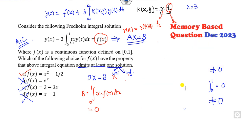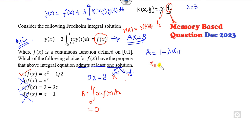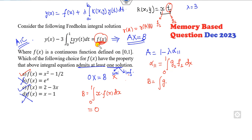Let me recall the concept. You change the integral equation into a system of equations, where a is 1 minus lambda times alpha11, and alpha11 is the integration from a to b of g1 into f1 dx. And b is g1 into the right-hand side function — note it is the right-hand side function f, not the kernel component.